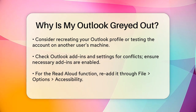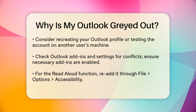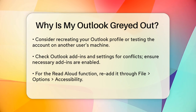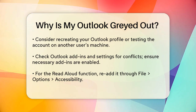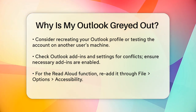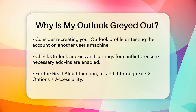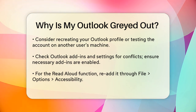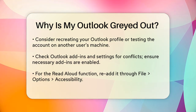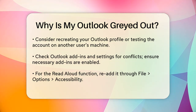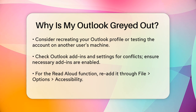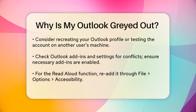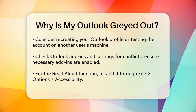If updating and profile checks don't work, it's worth looking into the add-ins and settings within Outlook. Ensure that the necessary add-ins are enabled and that there are no conflicts. For example, if the Read Aloud function is grayed out, you can try removing and re-adding it via File > Options > Accessibility > Show Read Aloud.